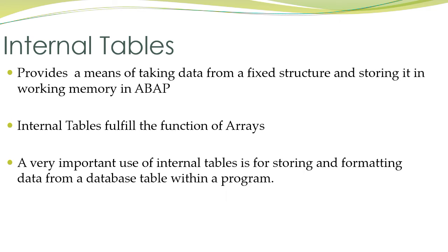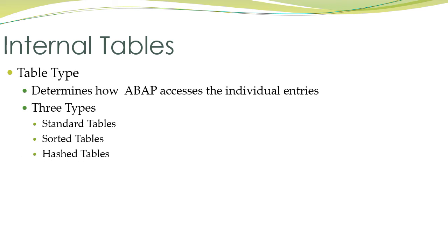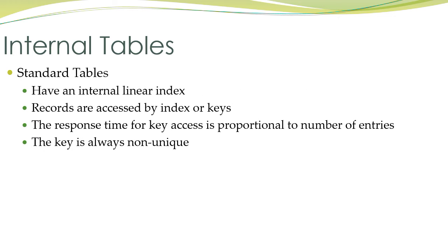There are three types of internal tables: standard tables, sorted tables, and hashed tables. We will see each one in depth. Standard tables have an internal linear index.